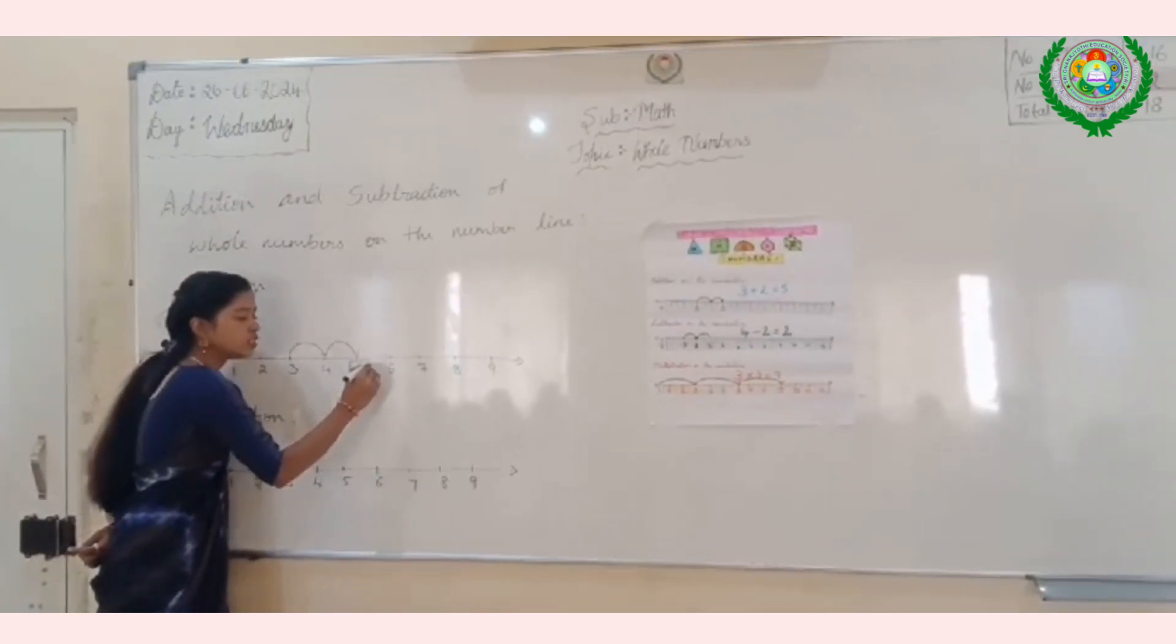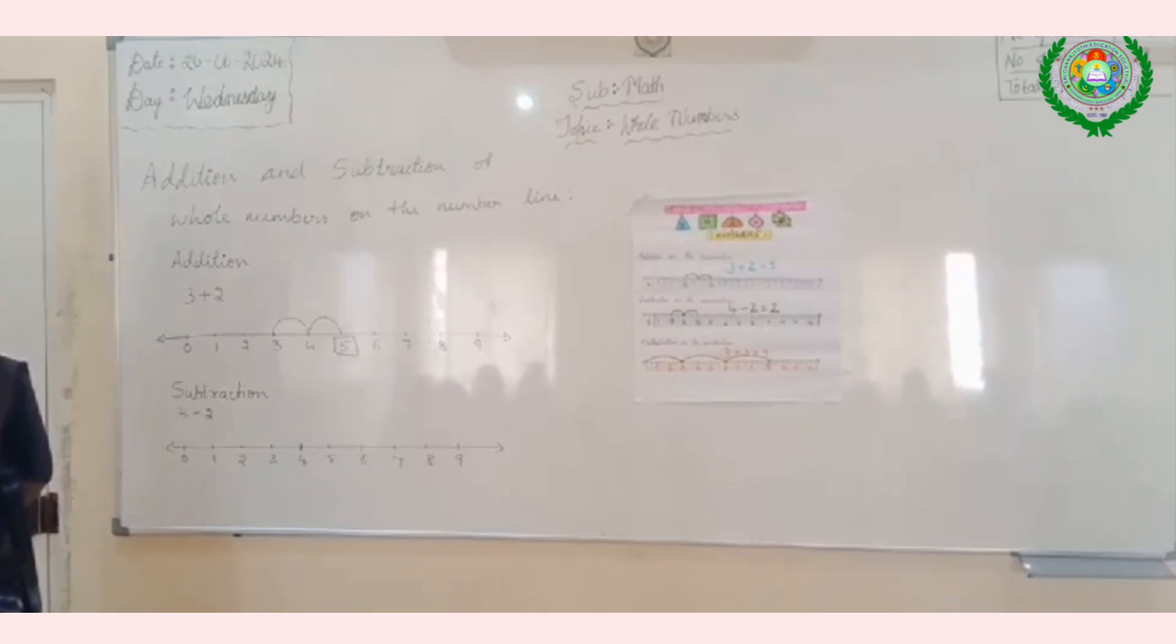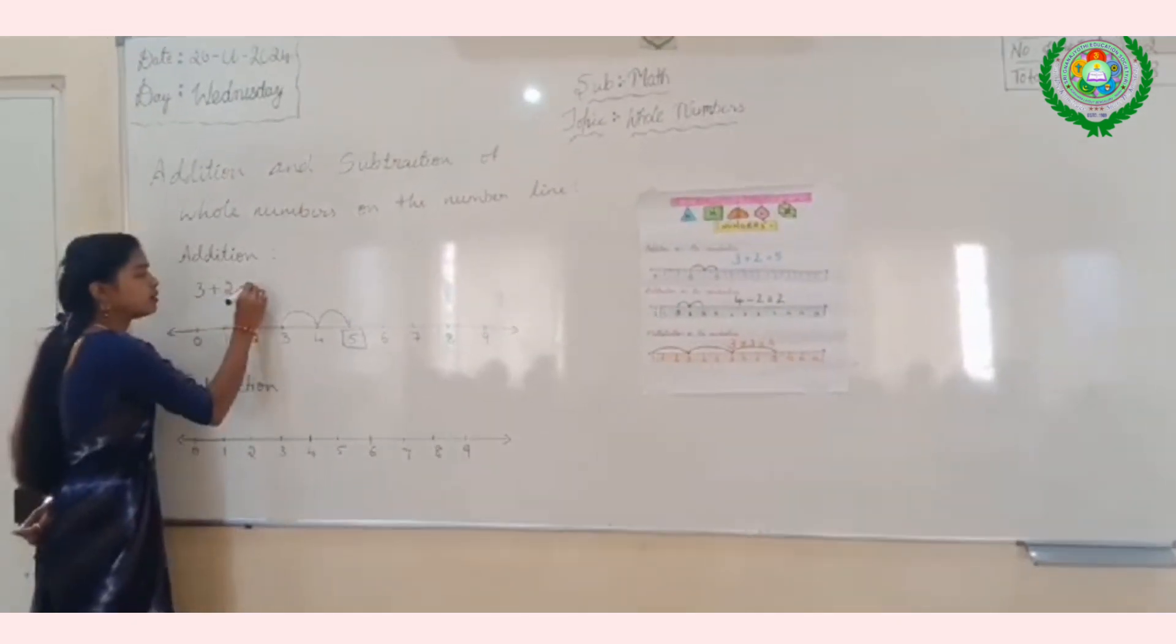Since we have already jumped two numbers on the right side, what is your answer now? What is 3 plus 2? 5. So, your answer is 5.